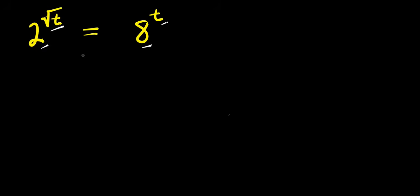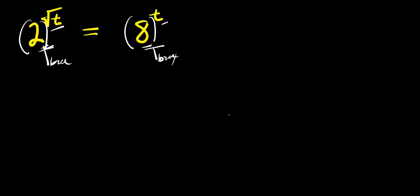When you are given an exponential problem such as this, in which the base here is quite different from the base here, what you are going to do is ensure that the two bases are the same. The 2 here is the smaller base compared to the 8, so we are going to express this 8 in terms of 2.